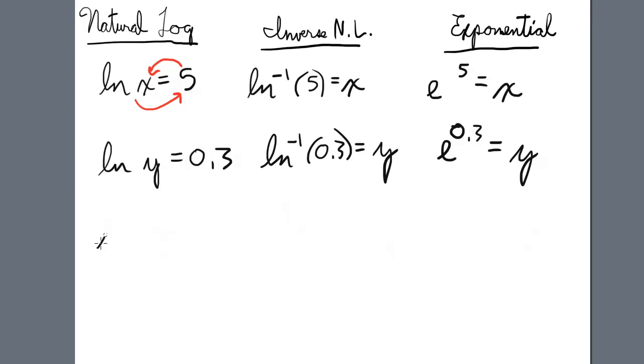Next, if we have ln of z equals negative 2, first let's do exponential, that would mean e to the negative 2 equals z.